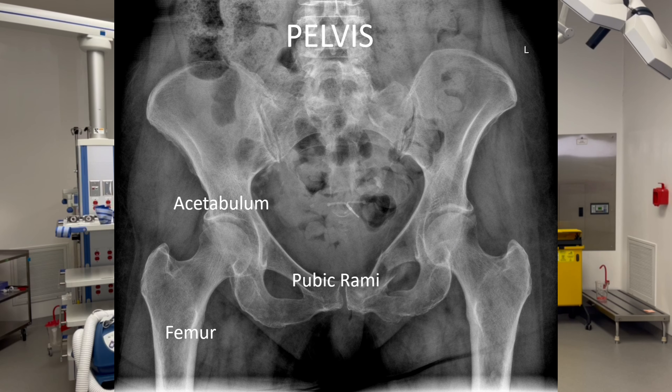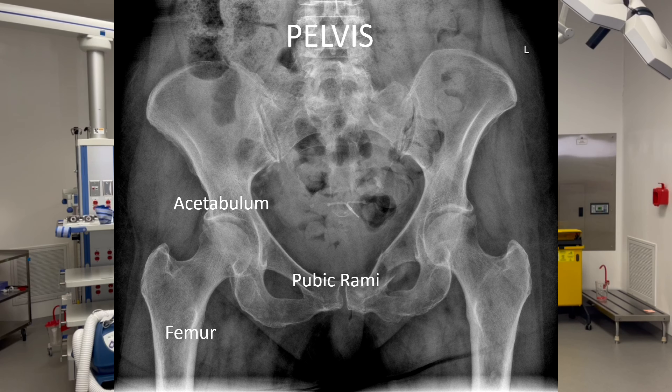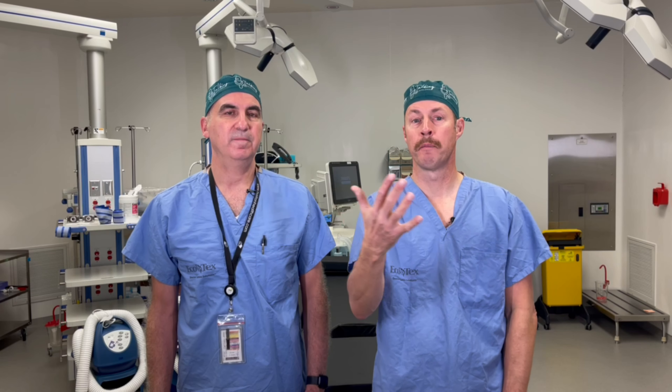Both hip and pelvic fractures are part of the pelvis, so they share that in common and they're close to the same area. Here's an x-ray of the pelvis. The main parts of the pelvis are the acetabulum, which is the socket part of the hip, and the pubic rami, which is sort of the front of the pelvis — the superior pubic rami and the inferior pubic rami. And then of course there's the hip, which is the femur and the femoral head articulating with the socket to make up the hip joint.